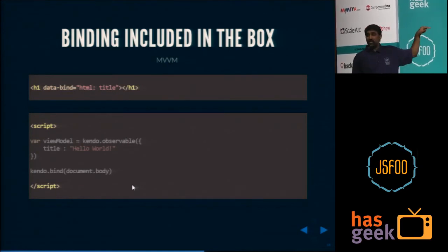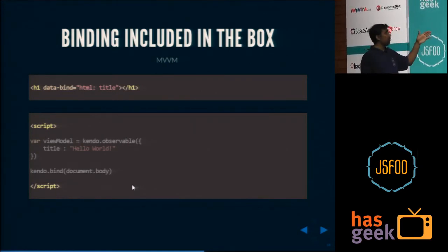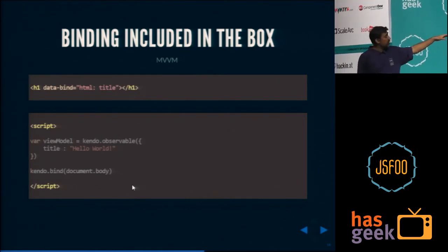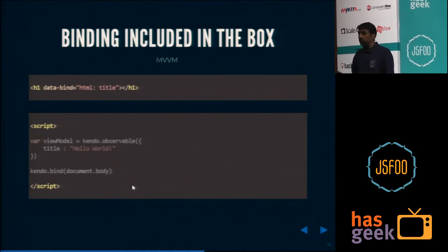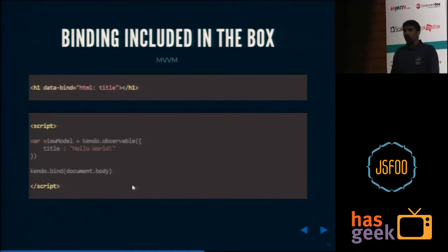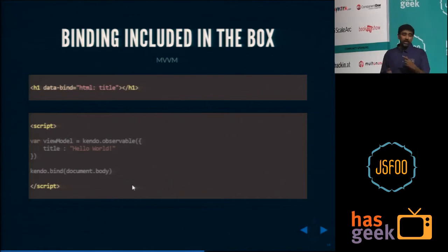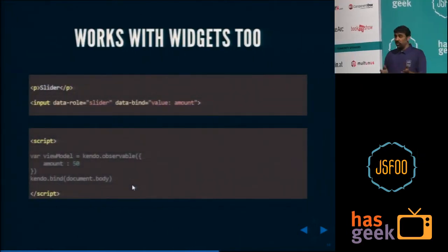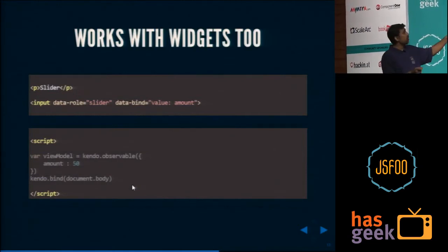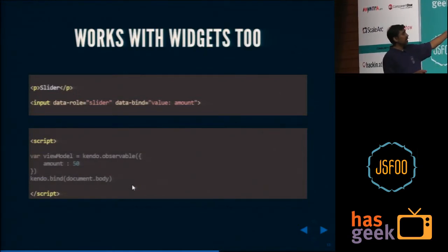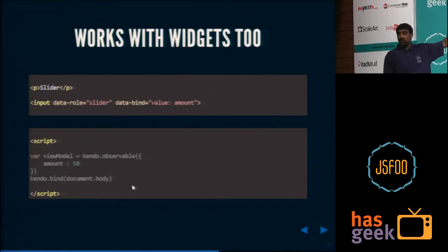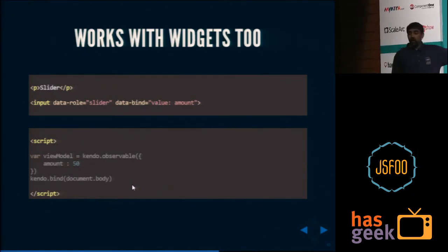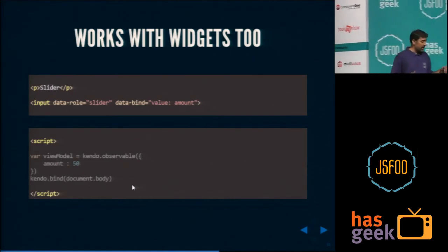What you're seeing here is an HTML binding expression: h1 data-bind HTML title. Where's the title? It's in the view model. The view model is an observable object. You make a change in the UI or in the object and it does two-way data binding. It works with widgets too — not just HTML expressions. You can say data-role slider, and data-bind value of that slider bound to an amount property in the observable view model. It's a two-way data binding.